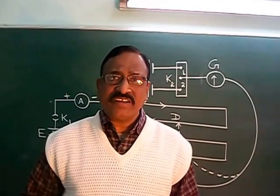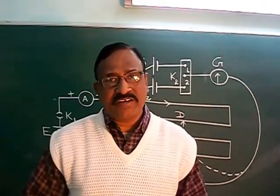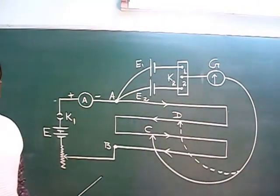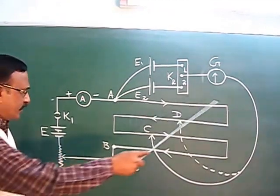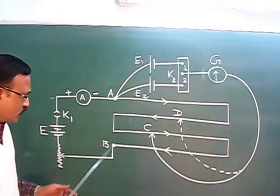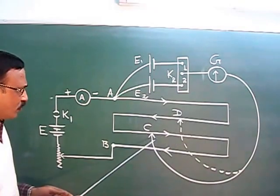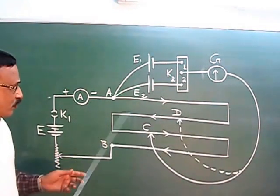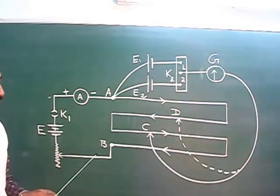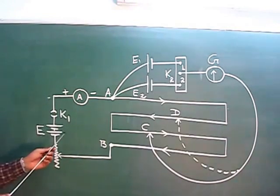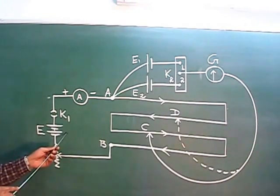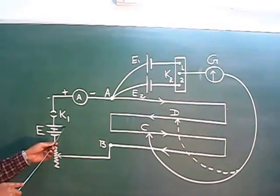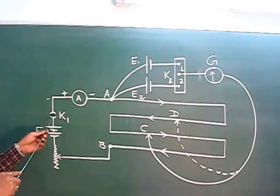Now let us understand how to perform this experiment using a circuit diagram. Here is the circuit diagram. A to B is the potentiometer wire, essentially a 4-wire potentiometer wire, each wire of length 100 centimeters, making it a 4-meter potentiometer wire. On one side we have the main supply E — the battery eliminator in our case — providing a high voltage supply, with its own key K1.